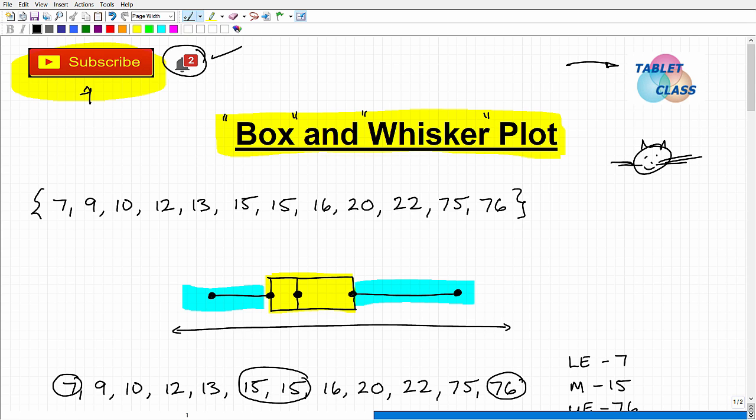Now what a box and whisker plot does for us, it's a way to examine data. There's a lot of ways you can look at information data. Let's talk about these numbers here so we can put this in more context. Let's say these numbers here 7, 9, 10, 12, 13, 15, 15, 16, 20, 22, 75, 76. Let's say this is the age of some people in a room.